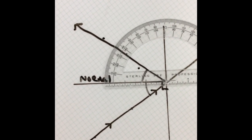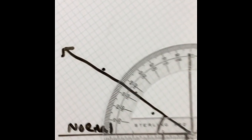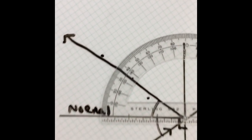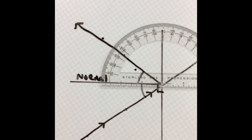Now taking a look at the outgoing ray, it also is 35 degrees. So both of these two angles are equal to each other.